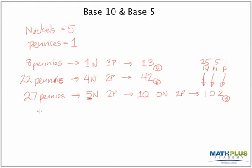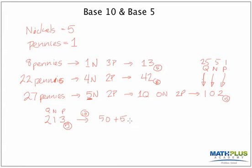Now I can start doing conversions. Let's say I have the number 2, 1, 3 in base five and I want to convert it to base ten. All I have to do is think: these are quarters, these are nickels, and these are pennies. Two quarters is fifty cents, a nickel is five cents, and three pennies is three cents. So this is fifty-eight in base ten. I can call that fifty-eight because it's in base ten. This would not be two hundred thirteen — that would be two twenty-fives, one five, and three ones.